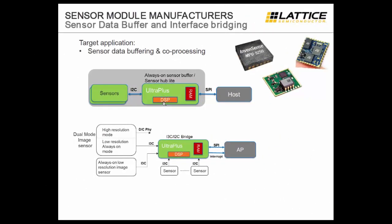Another sensor module application is sensor data buffering and co-processing, where sensor manufacturers need their sensors to connect to host processors. For example, a sensor connects through I2C to the UltraPlus device, where co-processing becomes possible using the available DSP modules. The one megabit of RAM in the UltraPlus enables the sensor manufacturer to do significant buffering, then hand off the data through a SPI interface to a host processor.